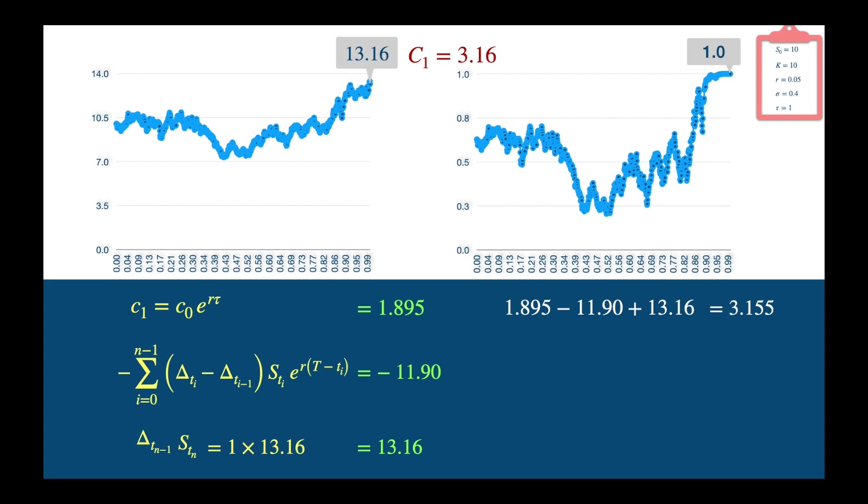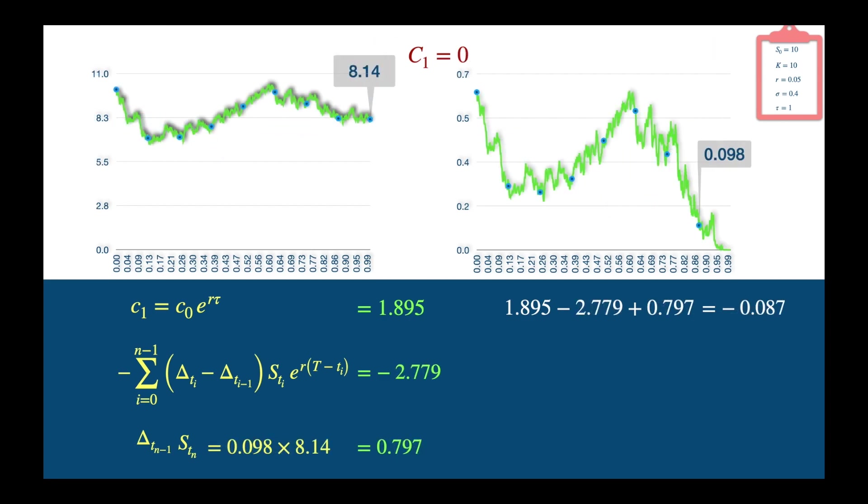Now this was one realisation of the stock price. Let's see what happens under a different scenario in which the path leads to the option expiring out of the money. So let's try the delta rebalancing with frequency of two observations per quarter, so you can see delta hedging is taking you to delta of zero, and the accuracy of the replication shall improve if you increase the number of steps.